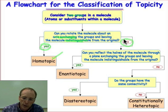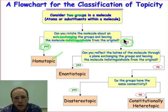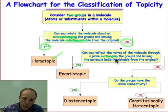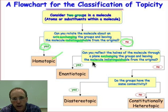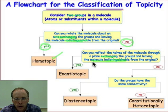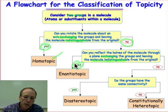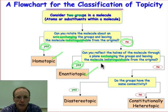If I can't find a rotation axis, I need to move on to the second question: can I dissect that molecule into two and reflect one part into another part, exchanging the groups in question and leaving the molecule after that reflection identical to the way it looked before the reflection? If the answer to that question is yes, those groups are related as being enantiotopic.